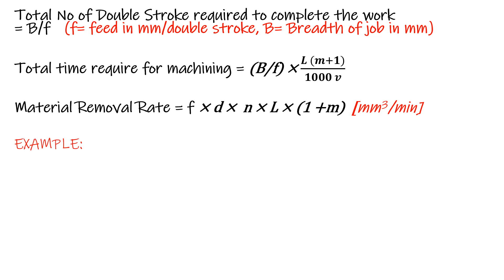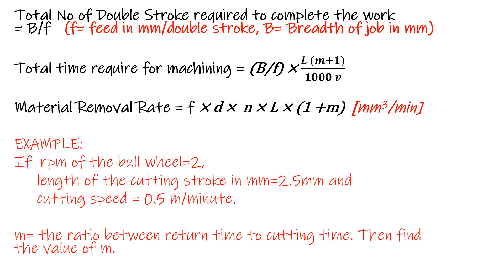Here is an example you can solve using the equations given in the video. The data given is: n (rpm) value, length of cutting stroke 2.5 mm, and cutting speed 0.5 meters per minute. You need to find out m — the ratio between return time and cutting time.